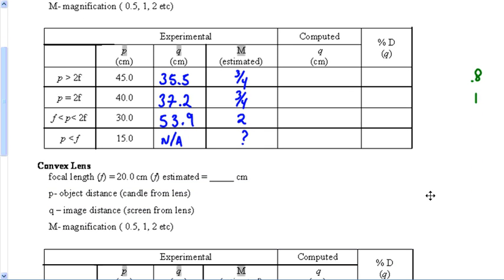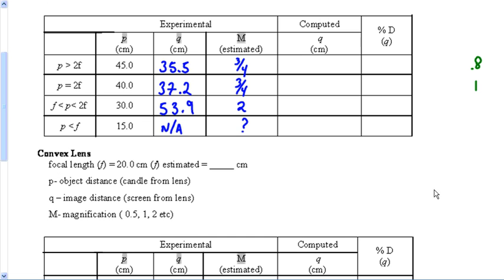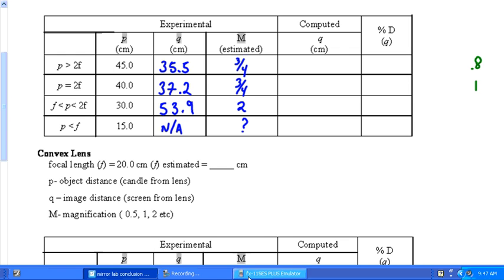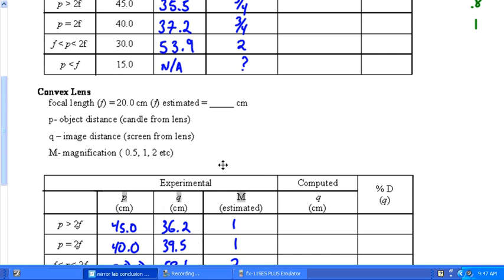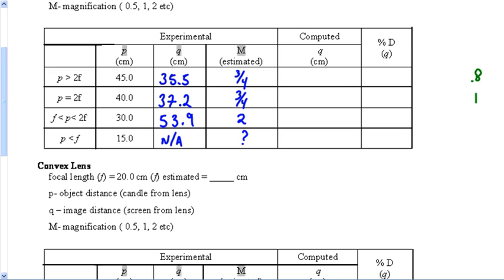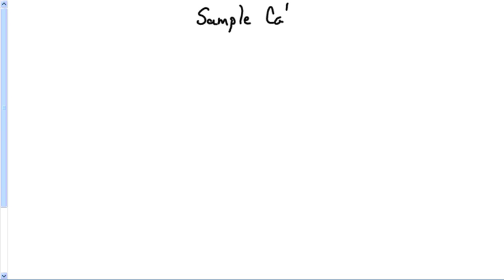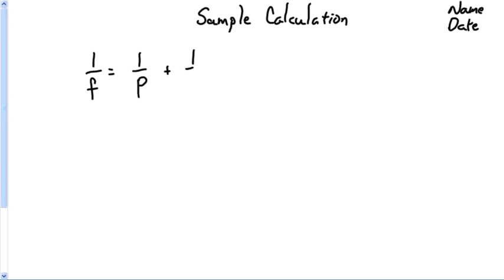This is what your table should look like — I got these numbers from one of the students. Let's go through and figure out how to do the computed columns. We've got a bunch of calculations to make, but they're all the exact same, which makes it easy. The calculations are the same for both tables. Let's go to a page and make this my sample calculation page. I'll put a name and date. Here is my equation: 1/f = 1/p + 1/q.